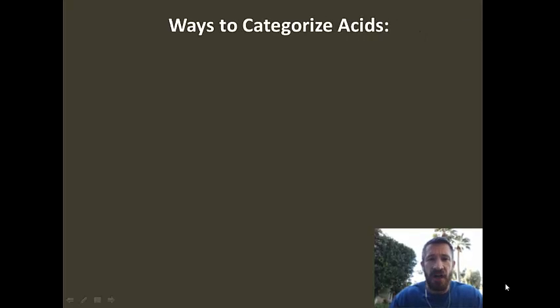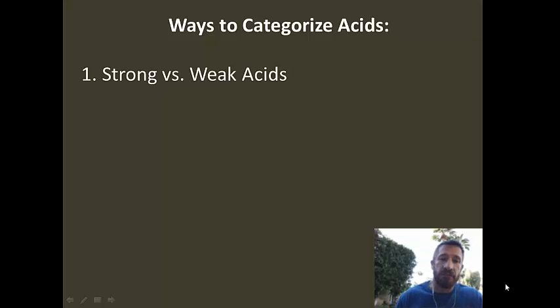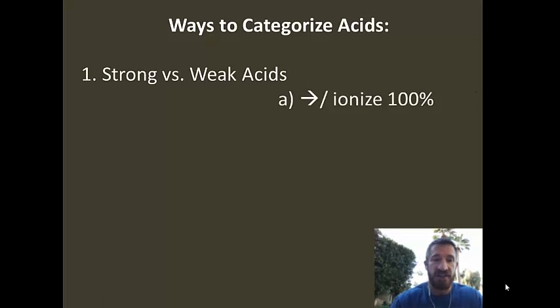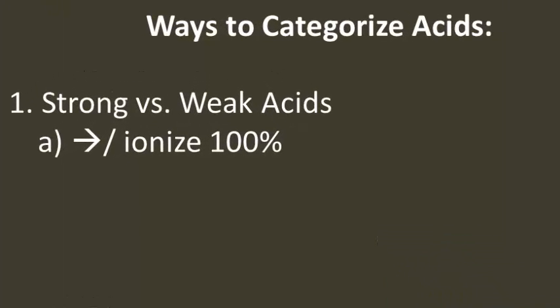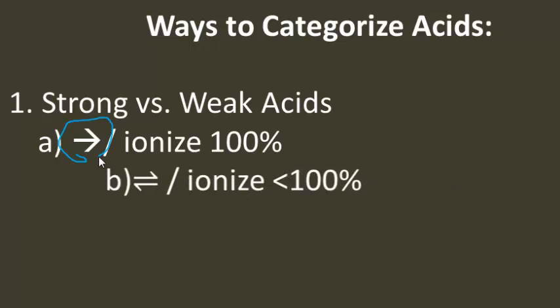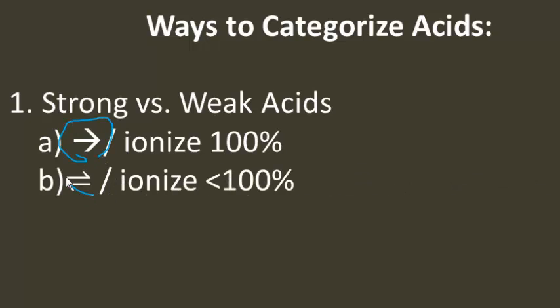A couple things. We've talked about how to categorize acids. We first said they're strong versus weak acids. Strong acids ionize 100% — we use that one-way arrow to represent the fact that they ionize all the way. Then we said there are weak acids, and they ionize less than 100%. We use that two-way arrow to represent the fact that not every single molecule loses its proton.